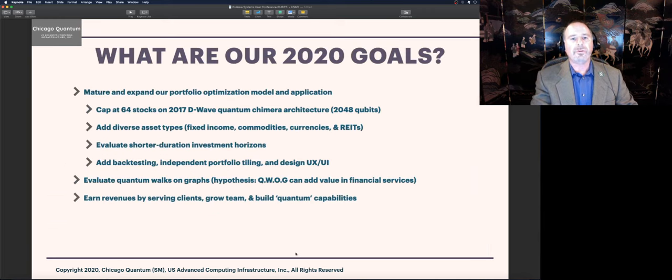What are our goals moving forward? First is we want to mature and expand our portfolio optimization model and the application that's going to run. We're going to cap it at 64 stocks because right now we're using the D-Wave Systems Chimera Architecture, the 2K. We're going to add diverse asset types. We're going to evaluate shorter duration investment horizons. And we're going to add back testing and independent portfolio tiling and a design user experience or user interface.